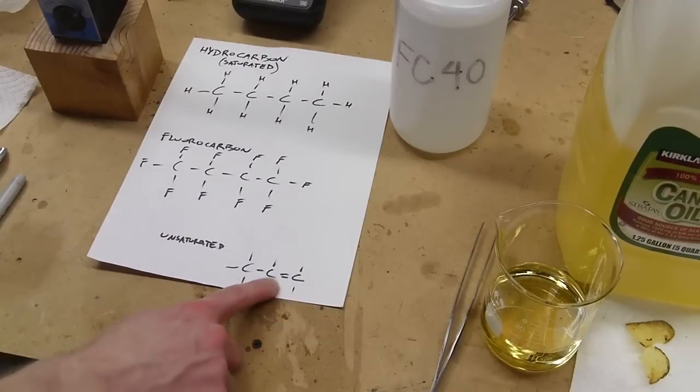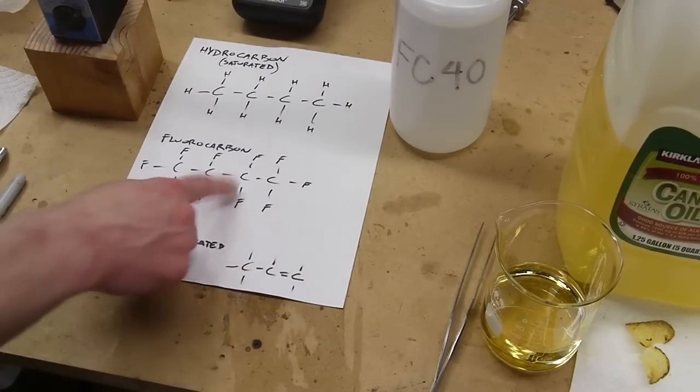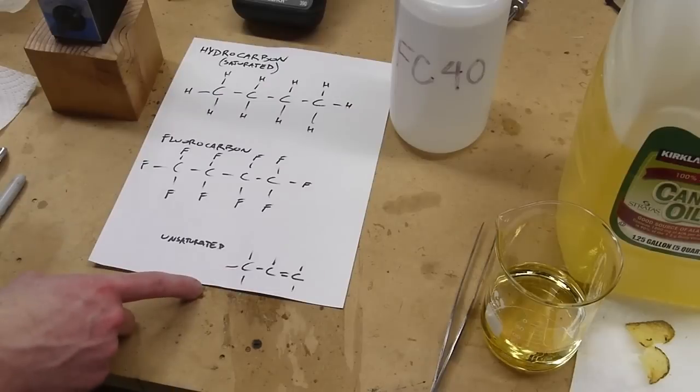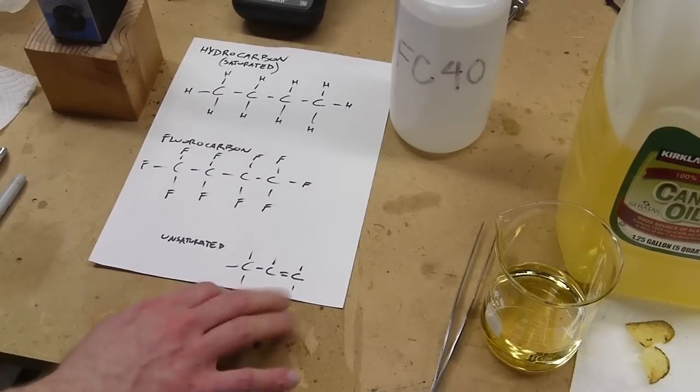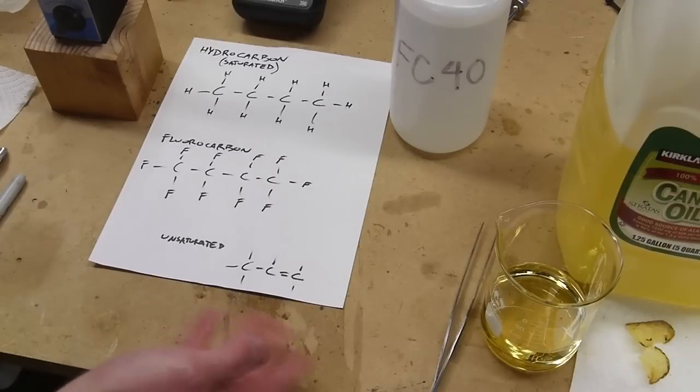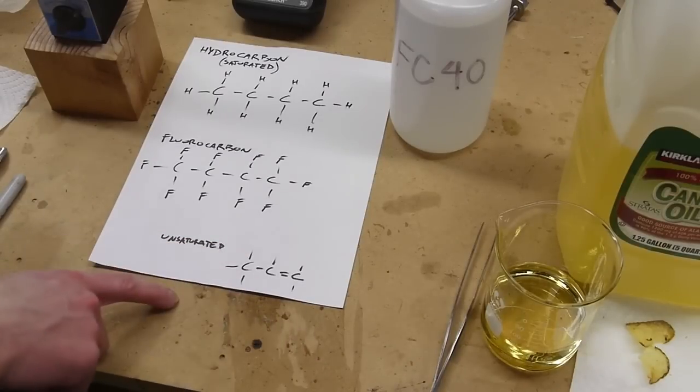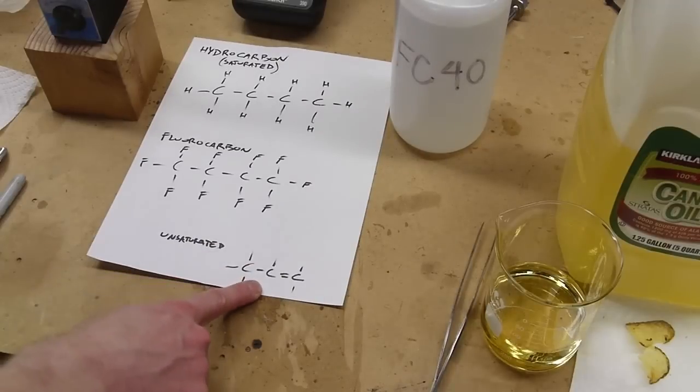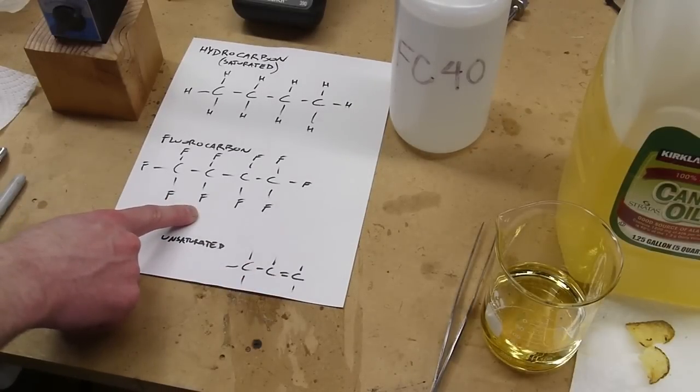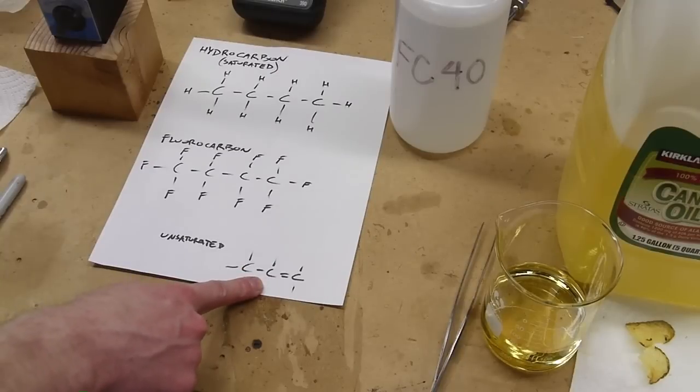One possibility is that you could have a double bond between two of the carbon atoms and then you wouldn't have spaces for as many hydrogens or fluorines. This is an unsaturated either hydrocarbon or fluorocarbon, depending what's on the ends of these bond links. And the properties of these are actually quite different, especially for the fluorocarbons. So this is a very inert liquid and these tend to be quite reactive.